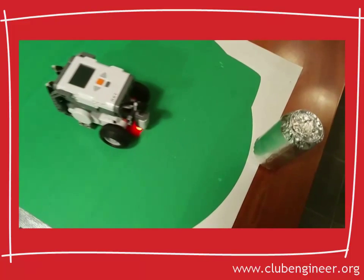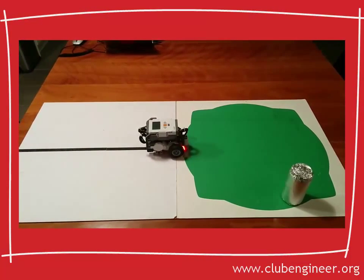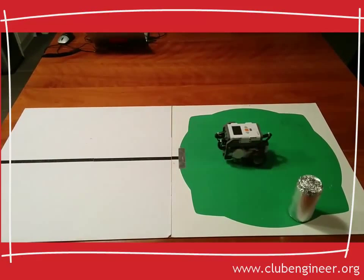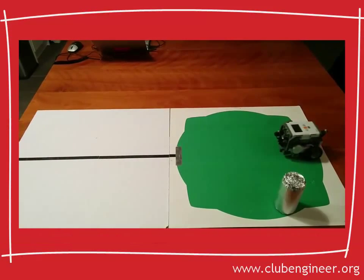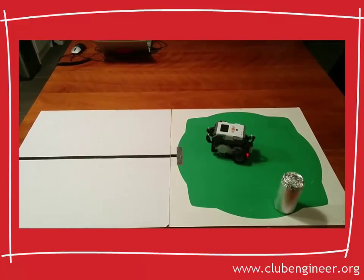Let's break that down into its individual steps. The program follows the line and when it detects silver, it exits the line following part of the program. It moves forward to the centre of the spill zone. It moves to the edge of the spill zone. It moves back to the centre of the spill zone. It rotates slightly and it repeats.